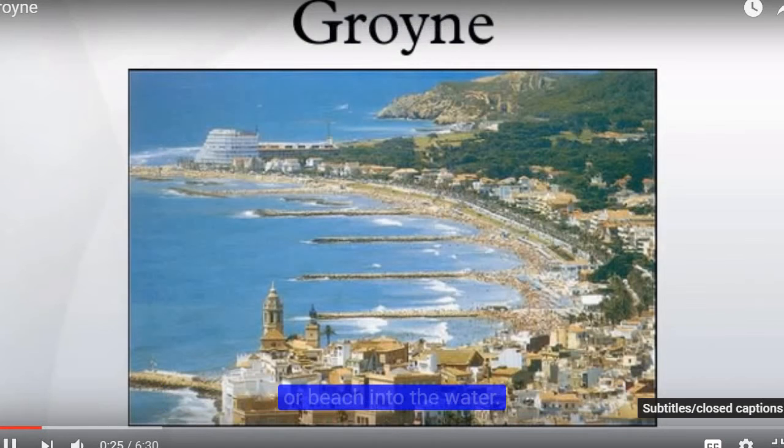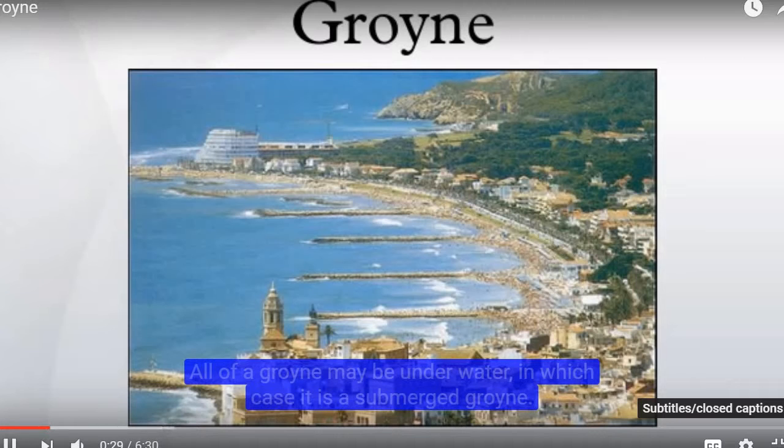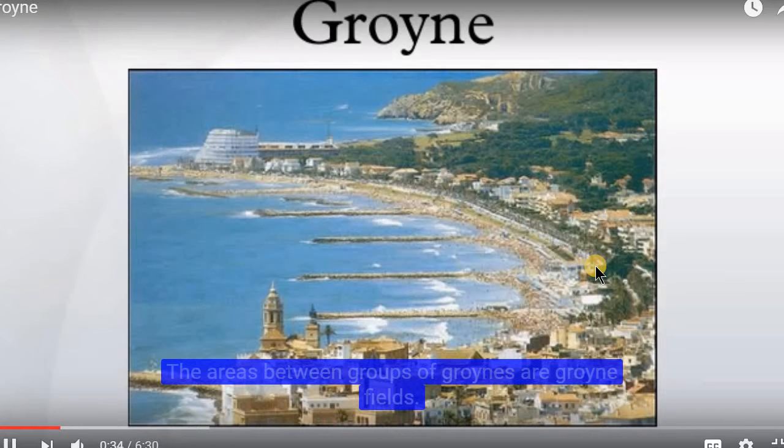Ocean groins run generally perpendicular to the shore, extending from the upper foreshore beach into the water. All of a groin may be underwater, in which case it is a submerged groin. The areas between groups of groins are groin fields.